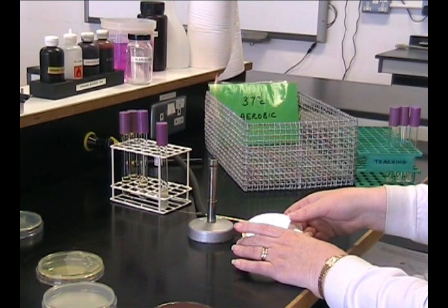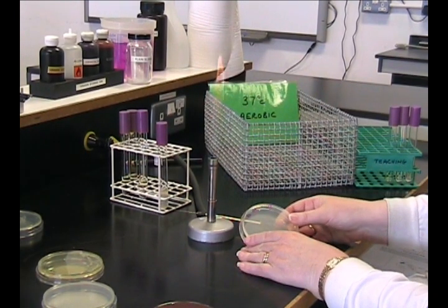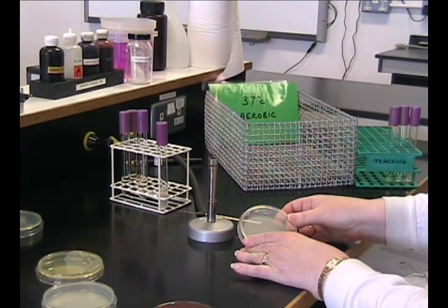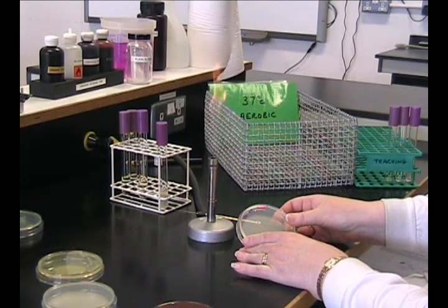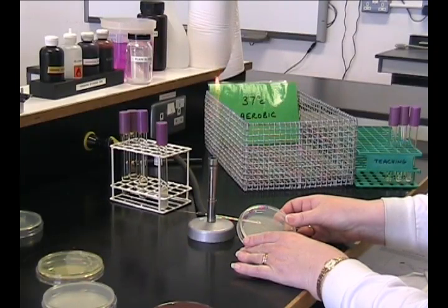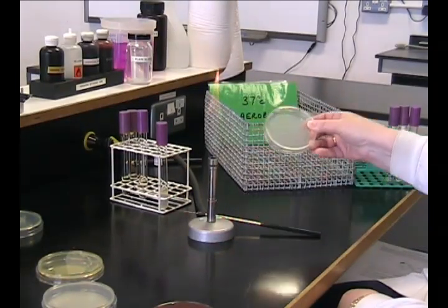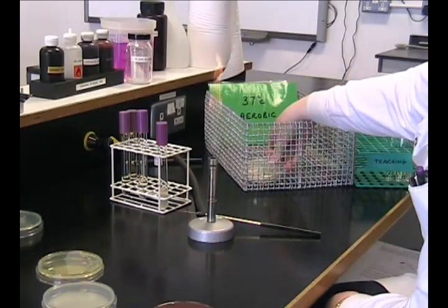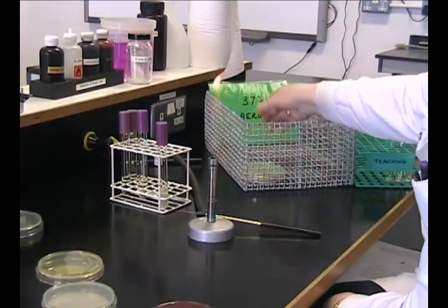When you've finished streaking your plate, it's important to label it with your initials, the type of media you've used and the date. This will enable you to find your plate in the next practical. Then place your plate ready for incubation inverted into the basket with the appropriate label and temperature.